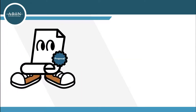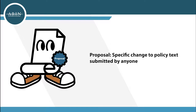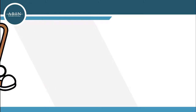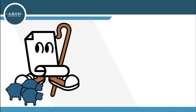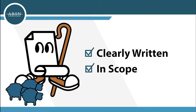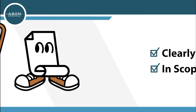It starts with a proposal — an idea for a specific change to policy text, submitted by anyone. The Advisory Council, or AC, is the elected body charged with moving the PDP along. The AC assigns shepherds to oversee the development of a draft policy from that idea. Those shepherds work with the author of the proposal to ensure it has a clear problem statement and fits within the scope of ARIN's mission.